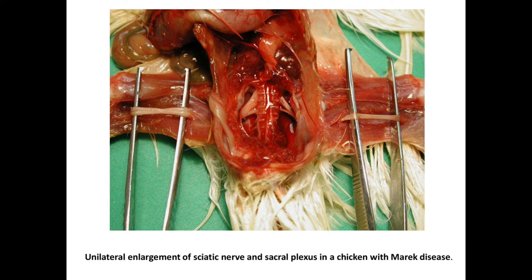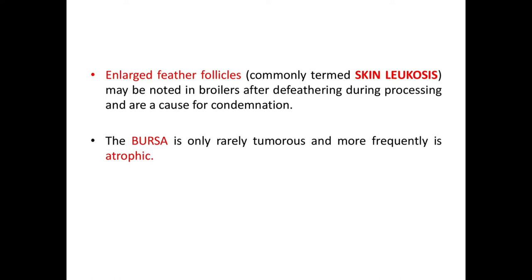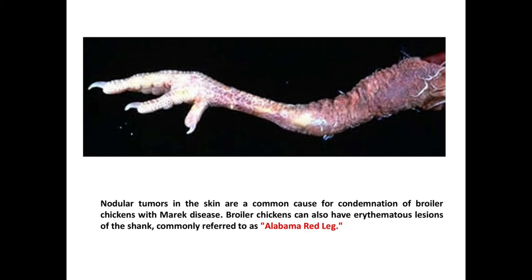Here you can see unilateral enlargement of the sciatic nerve and sacral plexus in a chicken with Marek's disease. Enlarged feather follicles, commonly termed skin leucosis, may be noticed in broilers after de-feathering during processing and are a cause of condemnation. The bursa is only rarely tumorous and is more frequently atrophic. Nodular tumors in the skin are a common cause of condemnation of broiler chickens with Marek's disease, and broiler chickens can also have erythematous lesions of the shank.